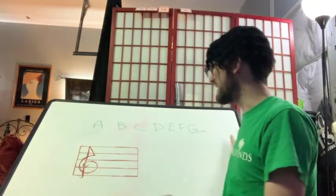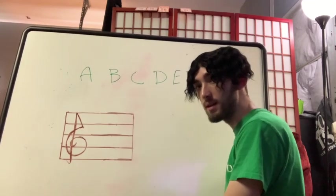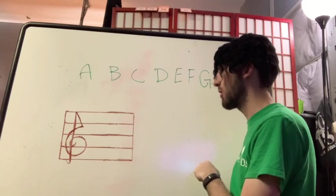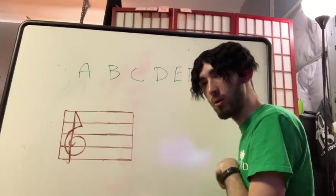It is also important to recognize that the staff doesn't naturally have ledger lines unless there are notes written on those ledger lines. The next step in our flashcards will be to recognize them without writing out the other ledger lines above and below it.